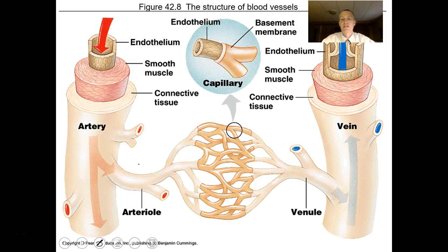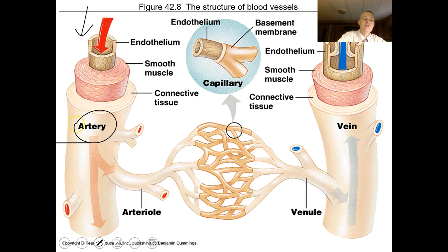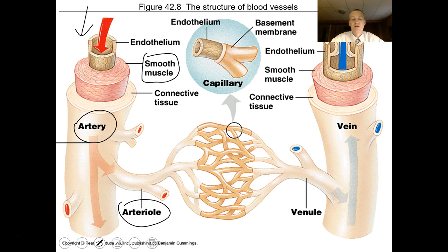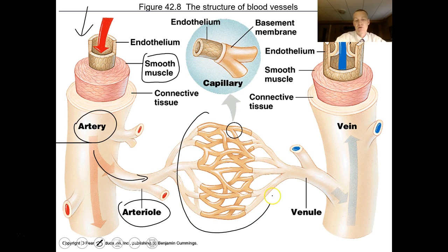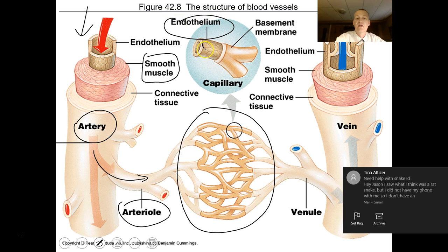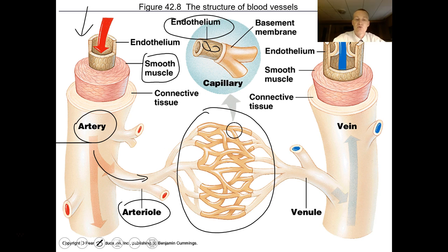Coming out of the heart are arteries, and here's an arteriole — the smallest blood vessel. Arteries have lots of muscle tissue, are elastic, and when blood surges through them they collapse back down. This smooth muscle tissue helps force blood away from the heart into capillary beds, where endothelial cells are only one cell layer thick. That's where gas exchange and nutrient exchange occurs. If you put all your capillaries end to end, they would encircle the earth — tens of thousands of miles of capillaries.